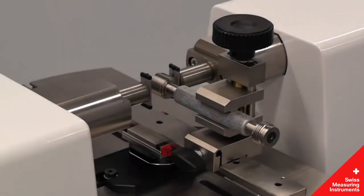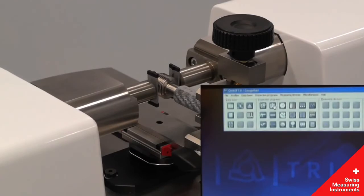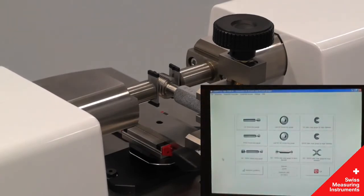Thread plugs could be measured with thread wires shown here in dedicated holders. The associated gauge management software, QMSoft, maintains a database of the available wire diameters. It will select the proper wire diameter to use for a given thread pitch.